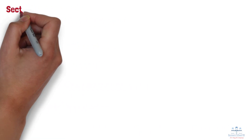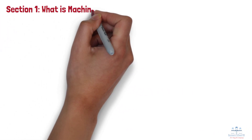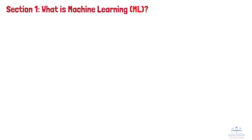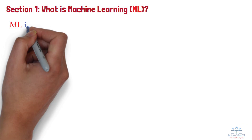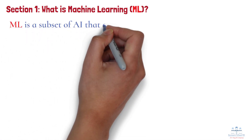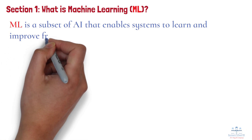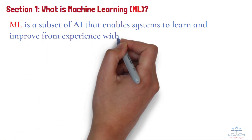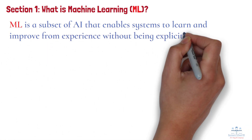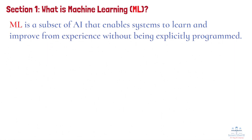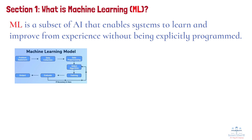Section 1: What is Machine Learning (ML)? Let's start with Machine Learning. ML is a subset of AI that enables systems to learn and improve from experience without being explicitly programmed. Instead of following hard-coded rules, ML models use data to identify patterns, make predictions, and improve over time.